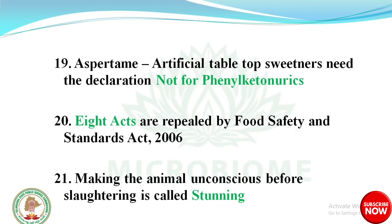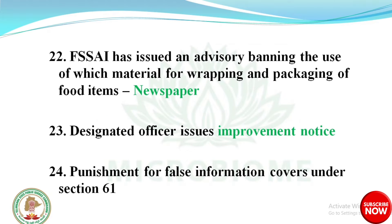As per terms, artificial tabletop sweeteners need the declaration 'not for phenylketonurics.' Eight acts are repealed by the Food Safety and Standards Act 2006. Regarding stunning — making the animal unconscious before slaughtering — the Food Safety and Standards Authority of India has issued an advisory banning the use of newspaper for wrapping and packaging of food items.